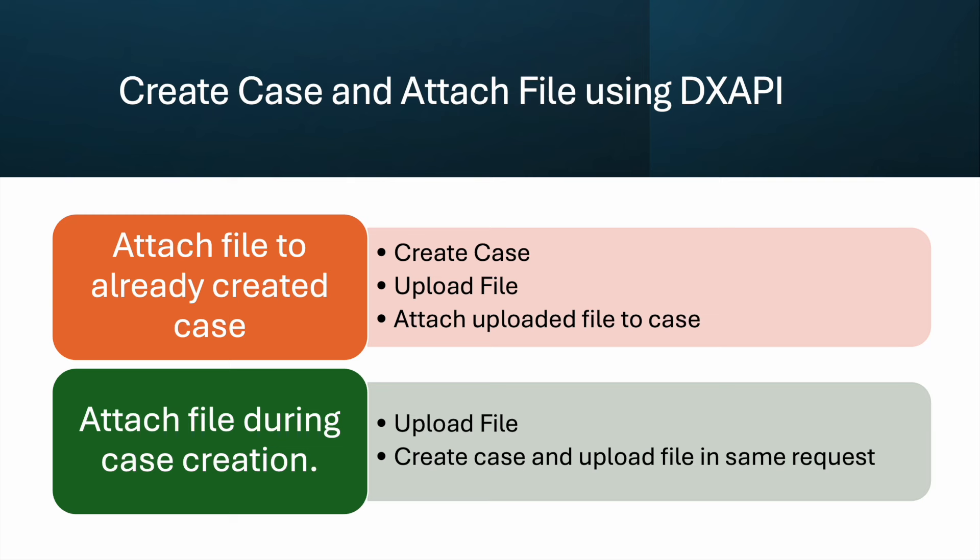There are two scenarios. The first scenario is attaching a file to an already-created case. Let's say you created a case through some external channel, and after some days the client is submitting a document. That channel — which is not in Pega — sends the document to the Pega system, so the document should be attached to that case. We are going to use three APIs: create case, upload file, and attach uploaded file to case. The upload file API uploads the file into the Pega database and provides you a reference ID.